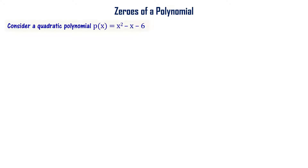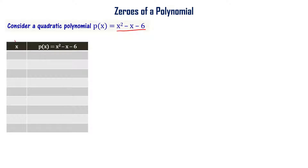Let us consider a quadratic polynomial p(x) equal to x² minus x minus 6. To represent it graphically, we find corresponding polynomial values for various values of x.